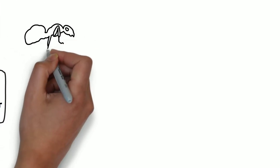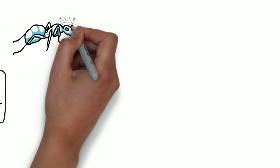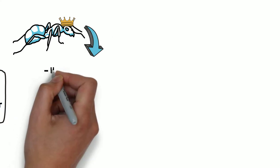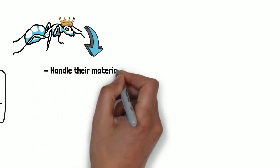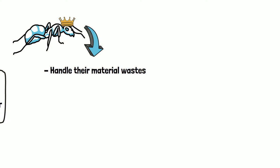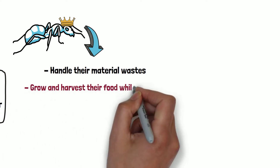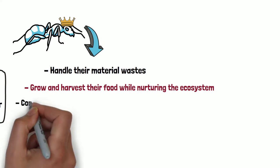Another great example is a community of ants. As a part of their daily activity, they safely and effectively handle their material waste and those of other species. Grow and harvest their food while nurturing the ecosystem of which they are a part.